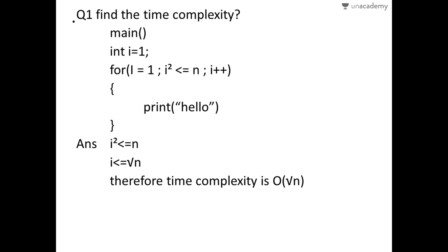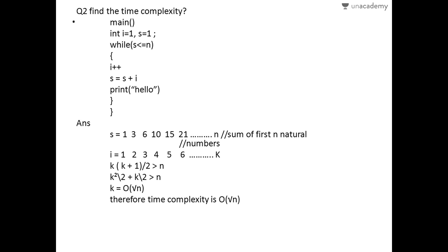In the next example, there is a main function with two variables i and s, both initially declared as 1. There is a while loop with the condition s less than or equal to n, then i increments by 1, and s increments as s equals s plus i. Then there is a print function printing hello.